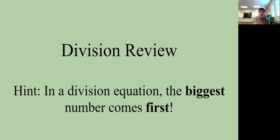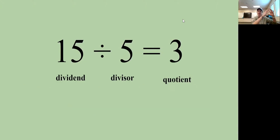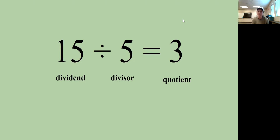Last topic: division. In a division equation, the biggest number always comes first because you are dividing that big number into smaller groups. For example, 15 divided by 5 equals 3 — 15 is the biggest number and is called the dividend; 5 is called the divisor. The answer to a division problem is called the quotient. So: addition → sum, subtraction → difference, multiplication → product, division → quotient.